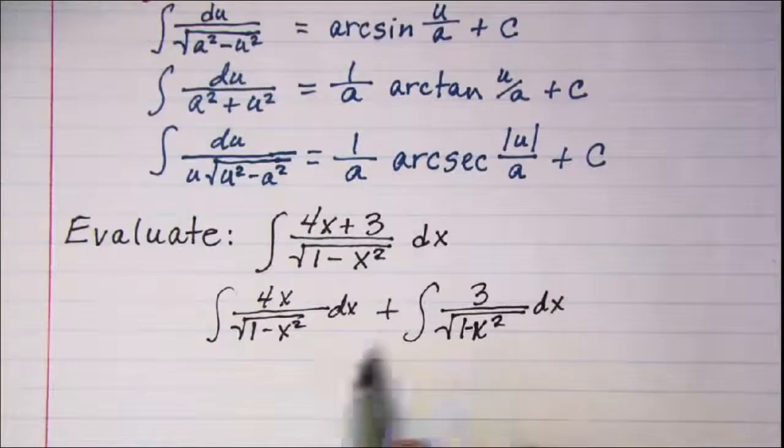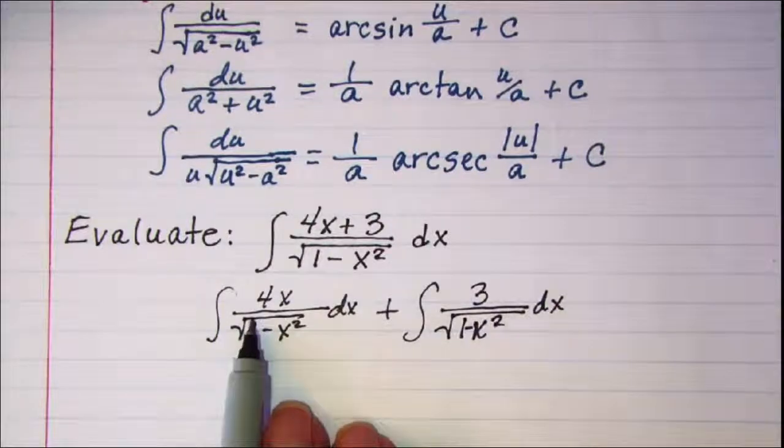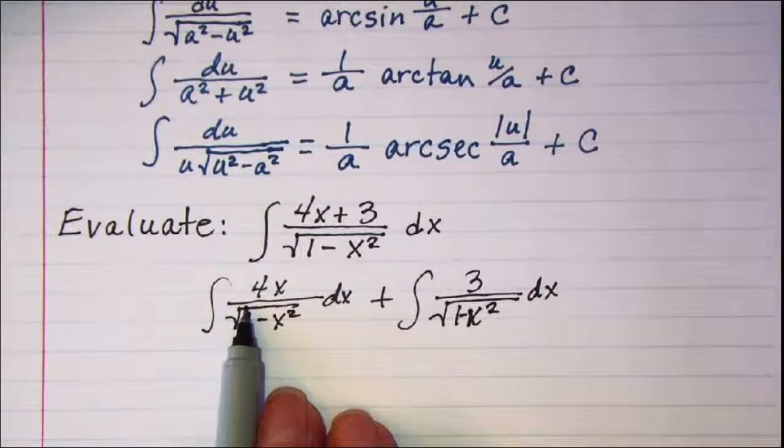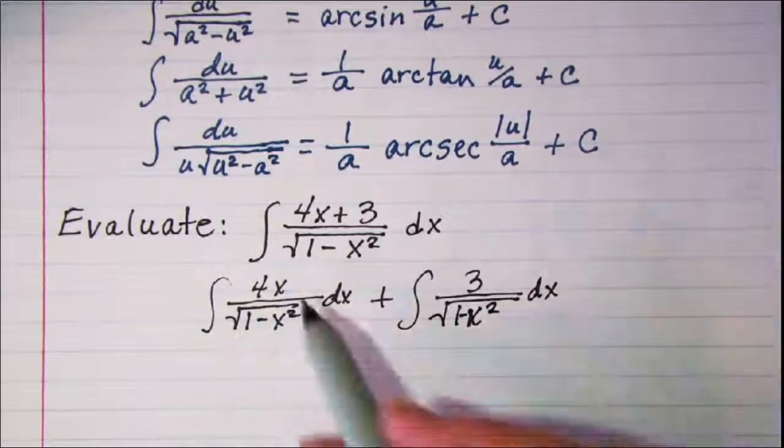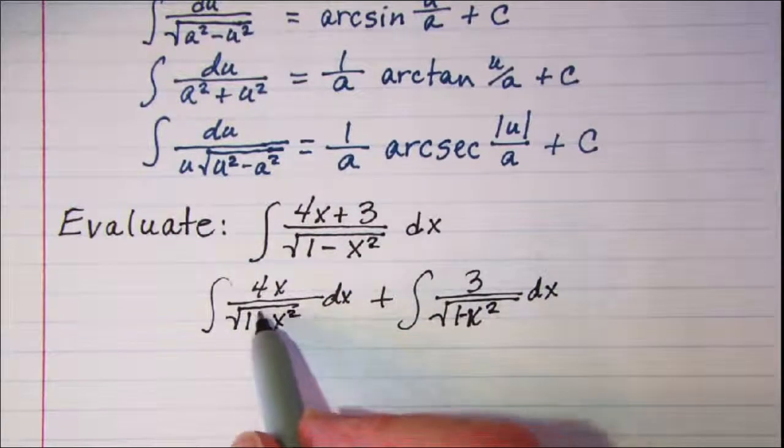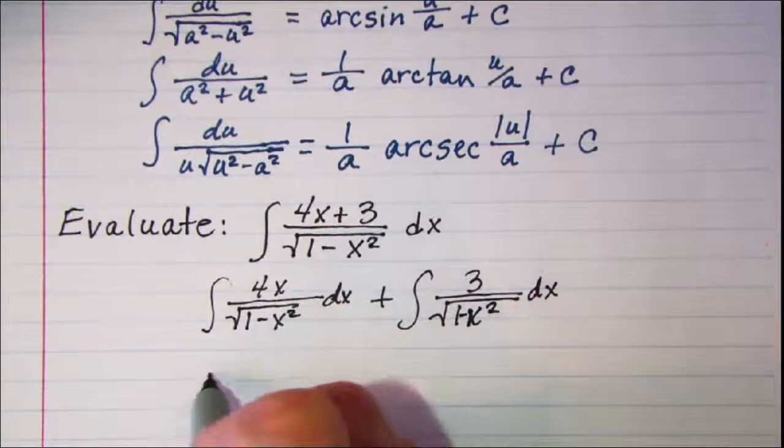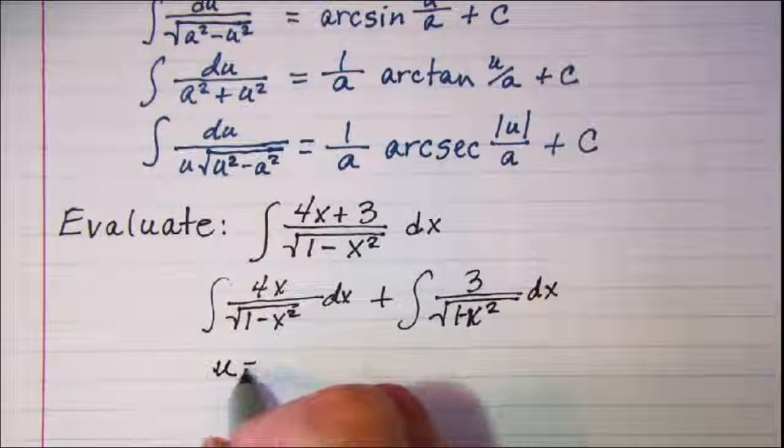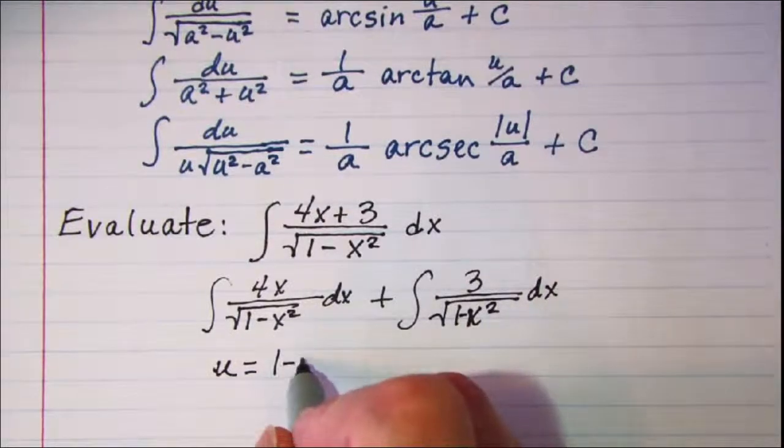Now on this one I can use the formula, and this one let's do some u substitution. I have this radicand, so u is equal to 1 minus x squared.